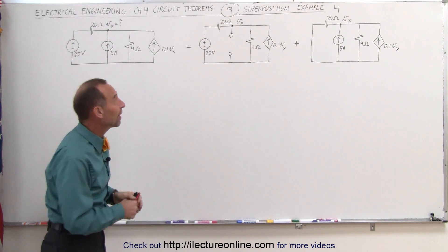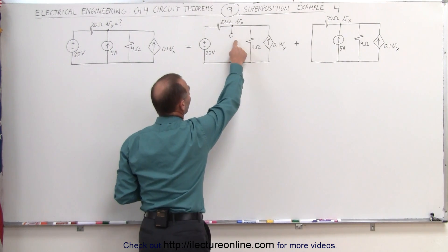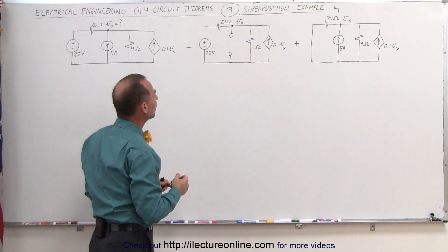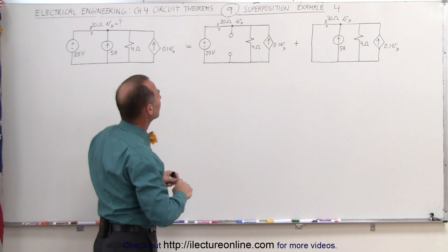So let's go ahead and find V sub X in this circuit and V sub X in that circuit, then simply add them together algebraically. To do that, we're going to use the node analysis method.